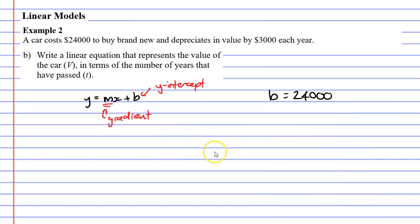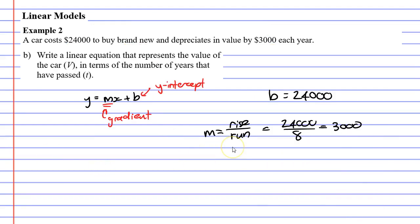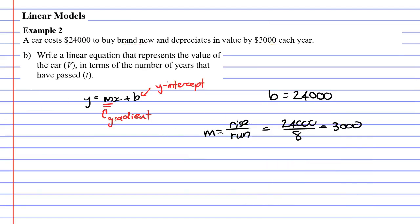We've got our rise and run. So to find our gradient, gradient is rise over run, which in this case is 24,000 over 8. And 24,000 divided by 8 is 3,000. Our gradient is 3,000. Now, your gradient can be negative or it can be positive. If we look at this graph, if I was to draw a running man on the left and he was running to the right, he would be running downhill. So our gradient needs to be a negative. It needs to be negative 3,000.